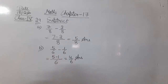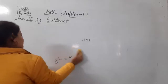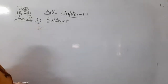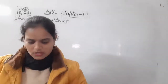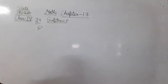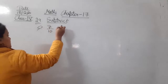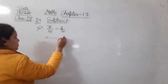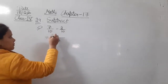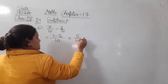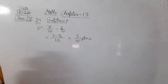Moving next to the C part of question number 29. The C part is 7 upon 10 minus 2 upon 10. As we can observe, the denominators of both numbers are equal. So we take the common denominator, 10, and subtract the numerators: 7 minus 2 will be 5. And the denominator is 10. So the answer is 5 upon 10.